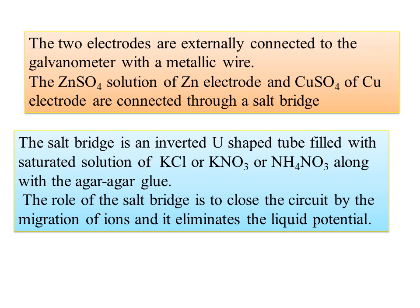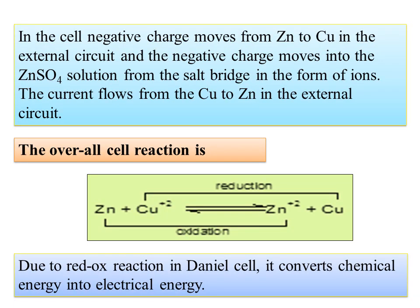The role of the salt bridge is to close the circuit by migration of ions and to eliminate the liquid junction potential. The salt bridge is an inverted U-tube filled with a saturated solution of either KCl, potassium nitrate, or ammonium nitrate along with agar-agar. The negative charges move from Zn to Cu in the external circuit. The overall reaction is: Zn + Cu²⁺ → Zn²⁺ + Cu. Due to the redox reaction, the Daniel cell converts chemical energy into electrical energy.